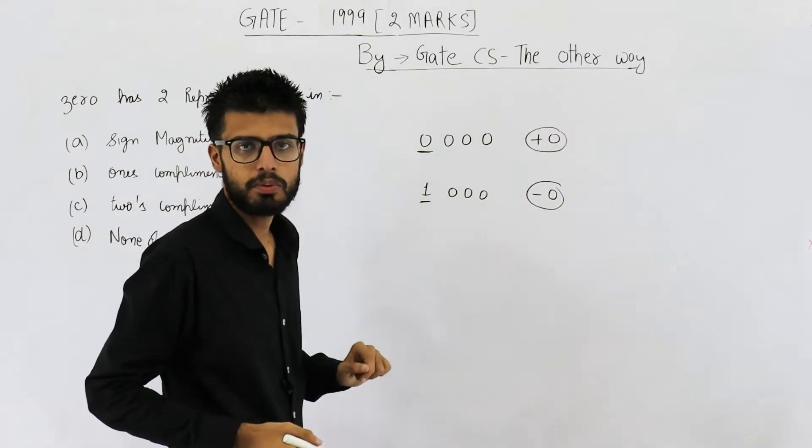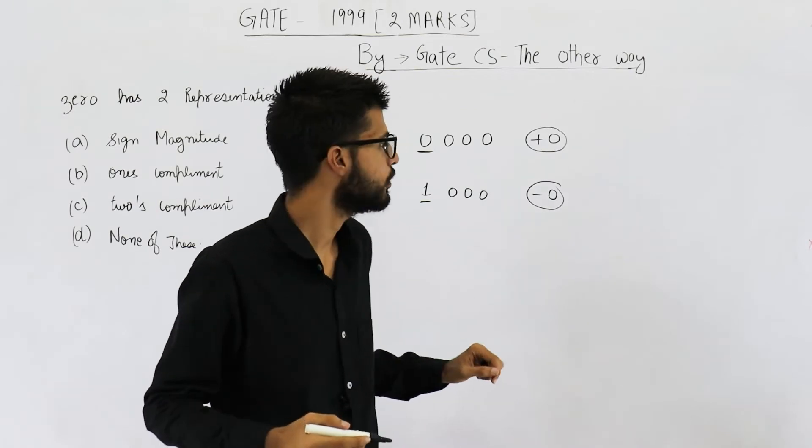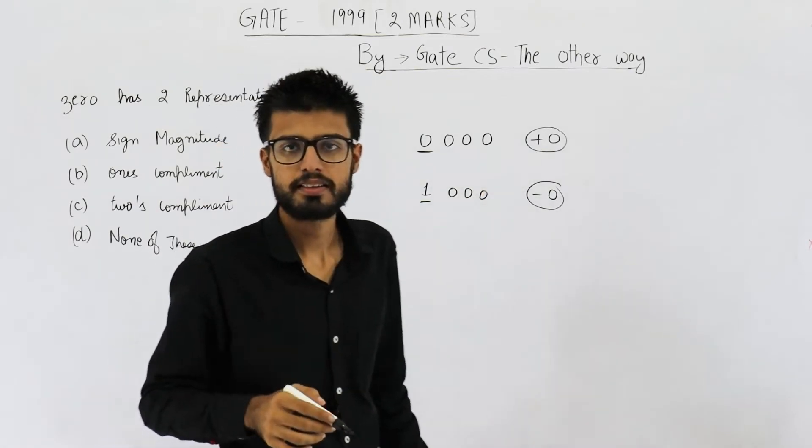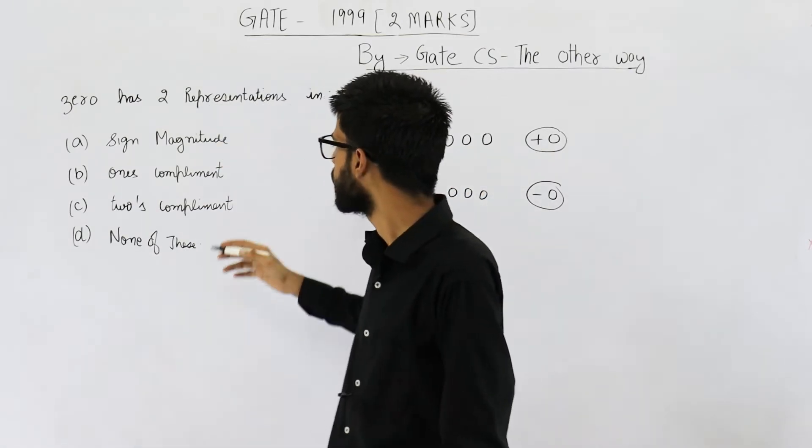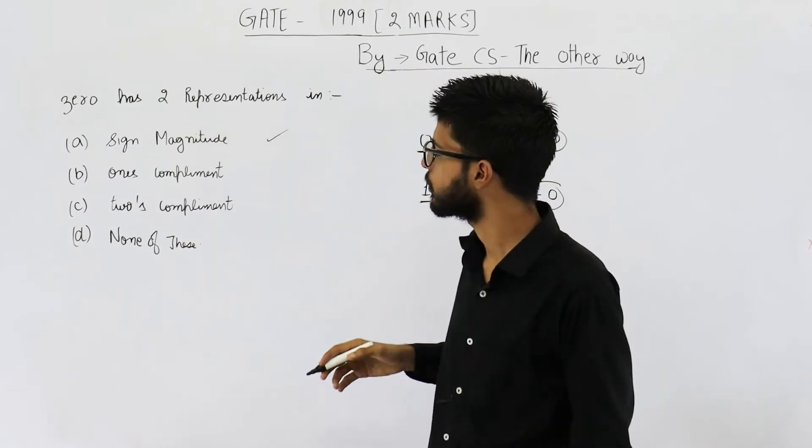Yeah. This is a problem in sign magnitude form that we have two representations for zero, and actually zero has a sign plus and minus. So this one has two representations for zero.